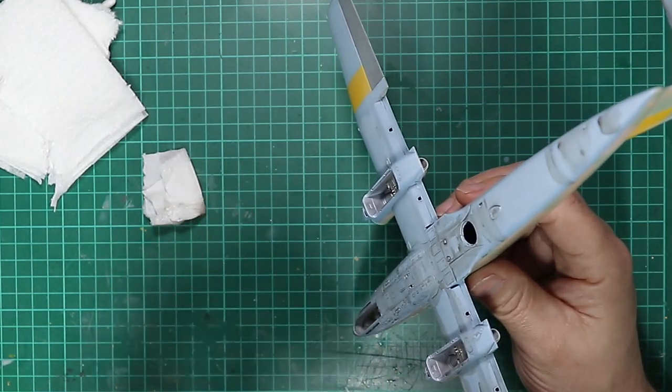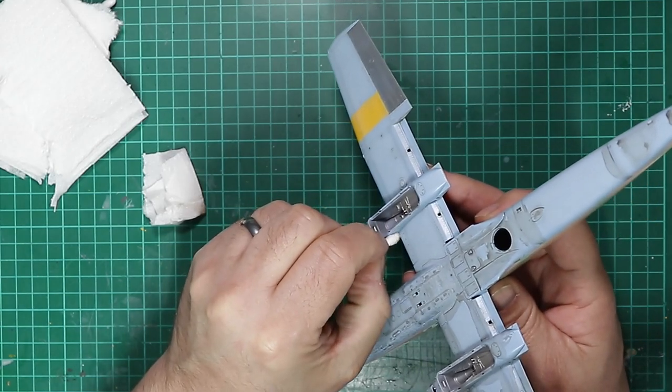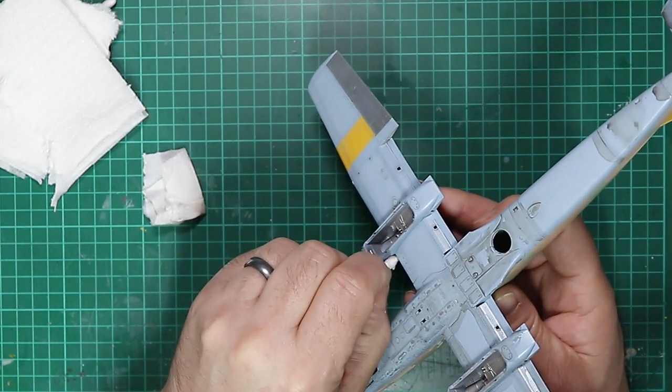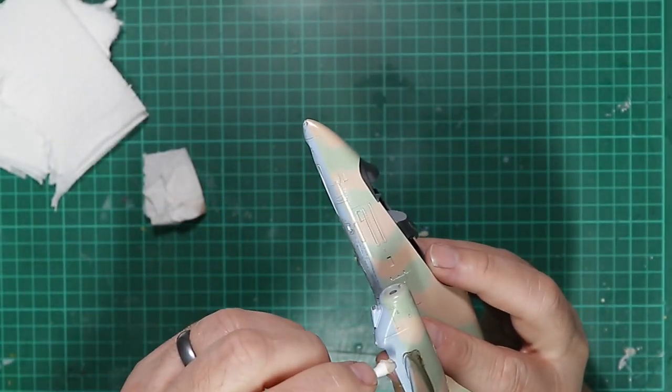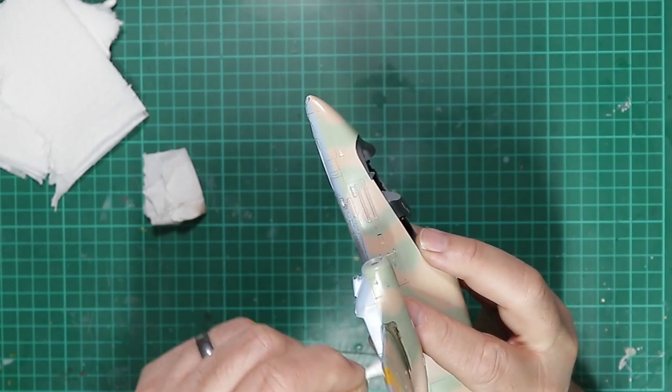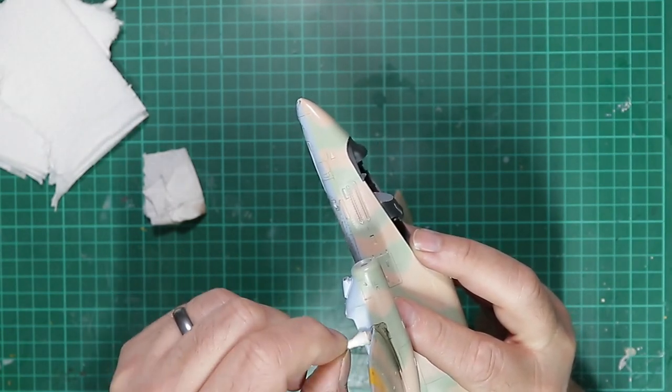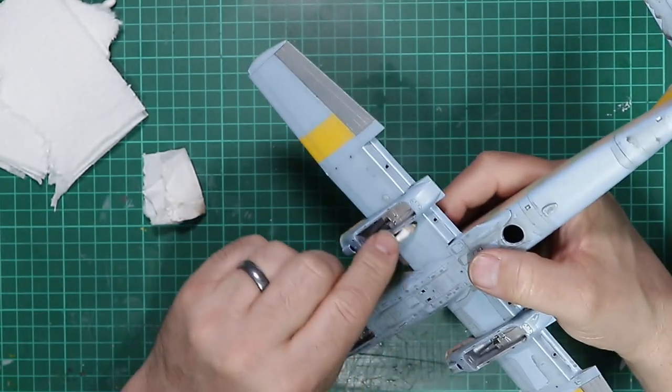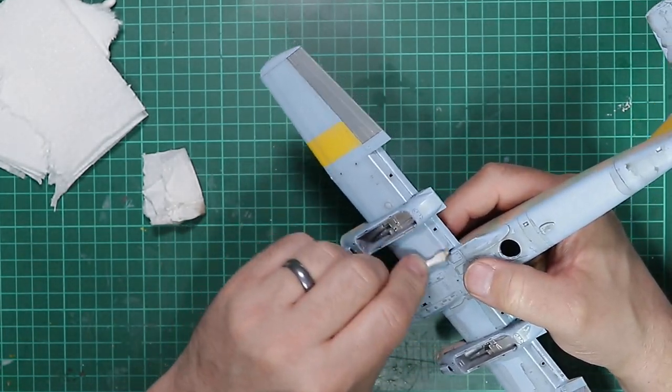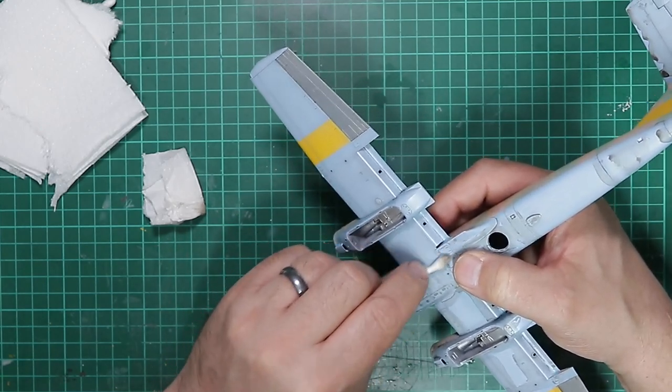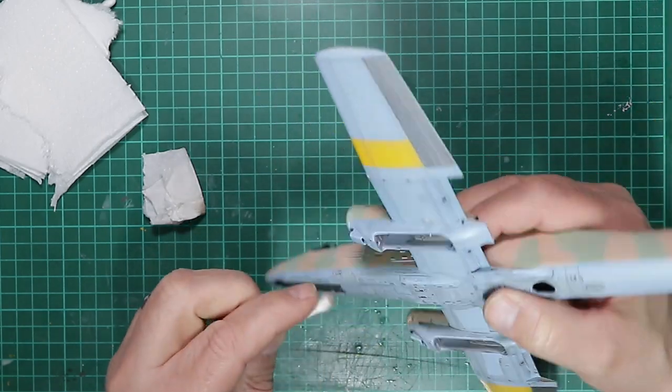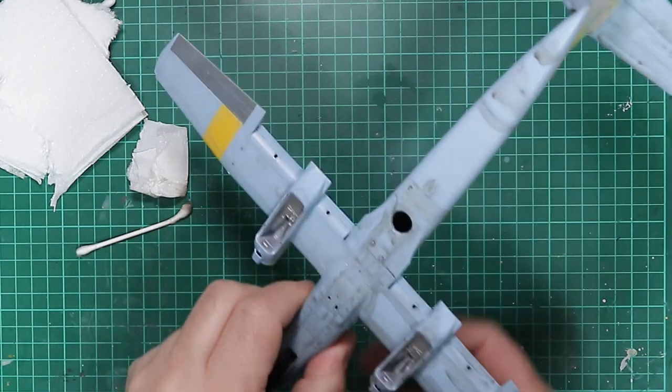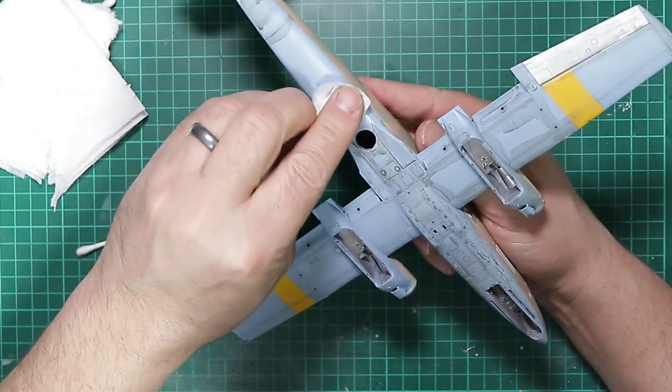So we just need to get this out of the crease of the engine nacelle and the flap recess. And the same on the other side. Everything's starting to look really nice and weathered. Now the effect that we've wanted is revealing itself. So we'll just work on the centre fuselage section.